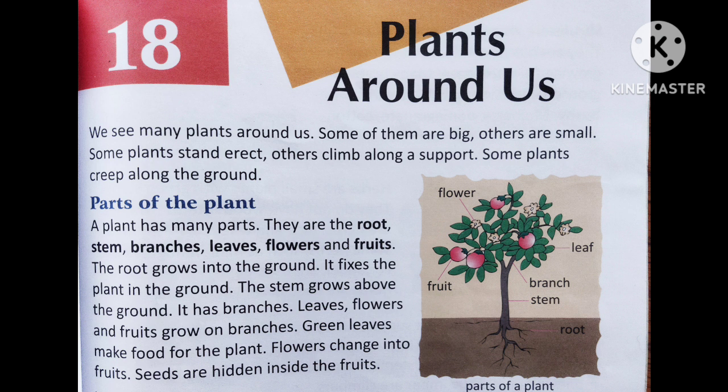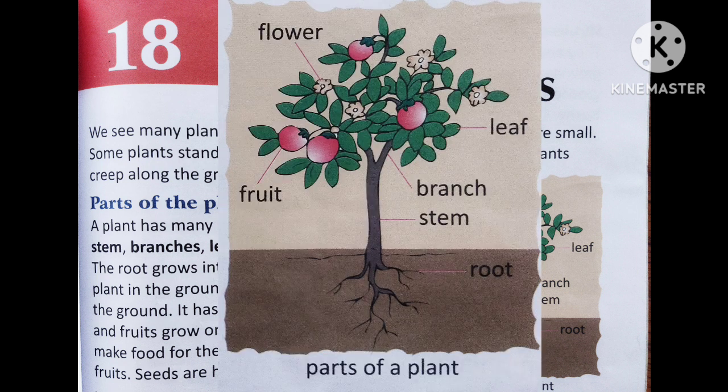The root fixes the plant in the ground. The stem grows above the ground and has branches. Leaves, flowers, and fruits grow on branches. Green leaves make food for the plant. Flowers change into fruits, and seeds are hidden inside the fruits.